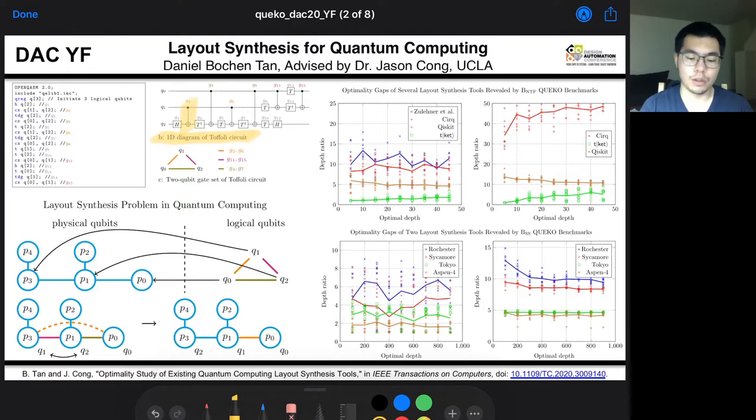In this quantum program, there are some two-qubit gates. Actually, for all three pairs of qubits, there are some two-qubit gates required. To execute this quantum program, we have to map the logical qubits to the physical qubits on the quantum chip.